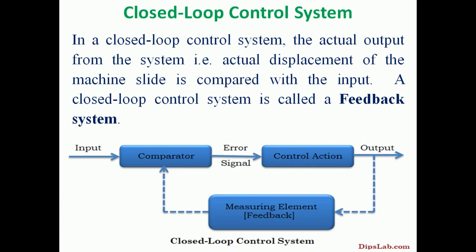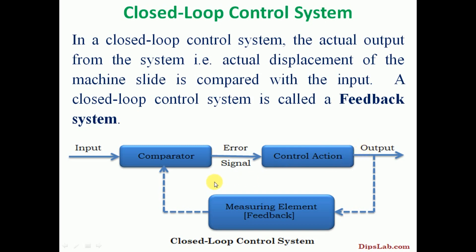The next one: the closed loop control system. In a closed loop control system, the actual output from the system — that is, the actual displacement of the machine slide — is compared with the input. A closed loop control system is called a feedback system. The output produced by the control action is measured by the measuring element, and that measured value is sent to a comparator where it is compared with the input. If any difference is there, an error signal is sent to the control action, which adjusts itself to give the required output. The output and input are compared in this closed loop control system.